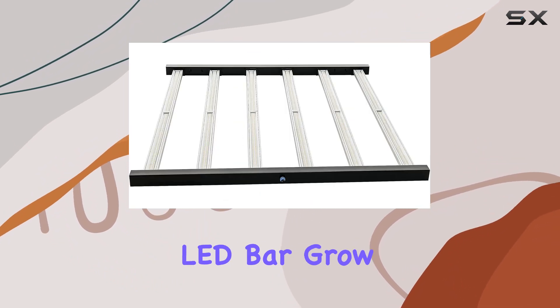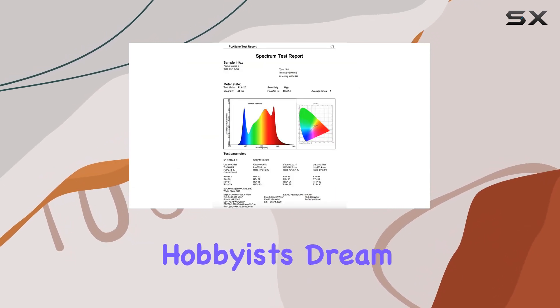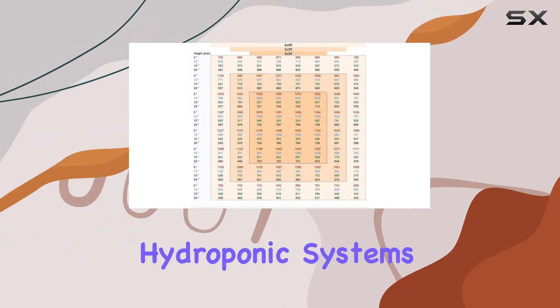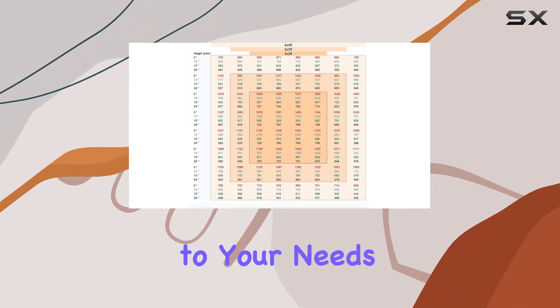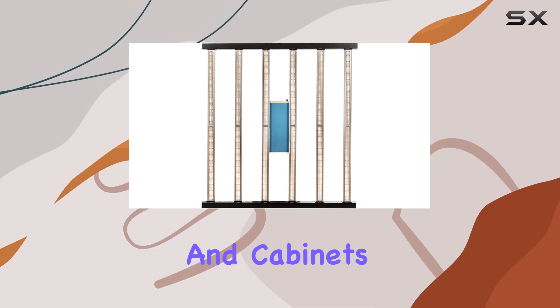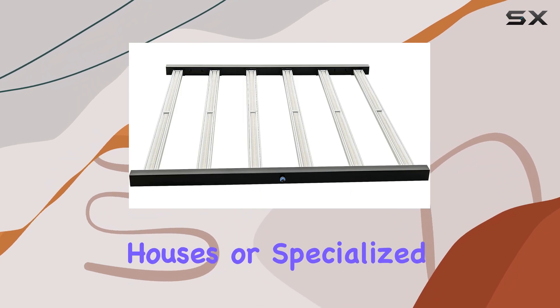The Alpha 6 LED bar grow light is also incredibly versatile, making it a hobbyist's dream. Whether you're growing plants in soil or using hydroponic systems, this light adapts to your needs. It's suitable for use on tables, stands, terraces, and cabinets, and can be installed in grow tents, houses, or specialized grow rooms.